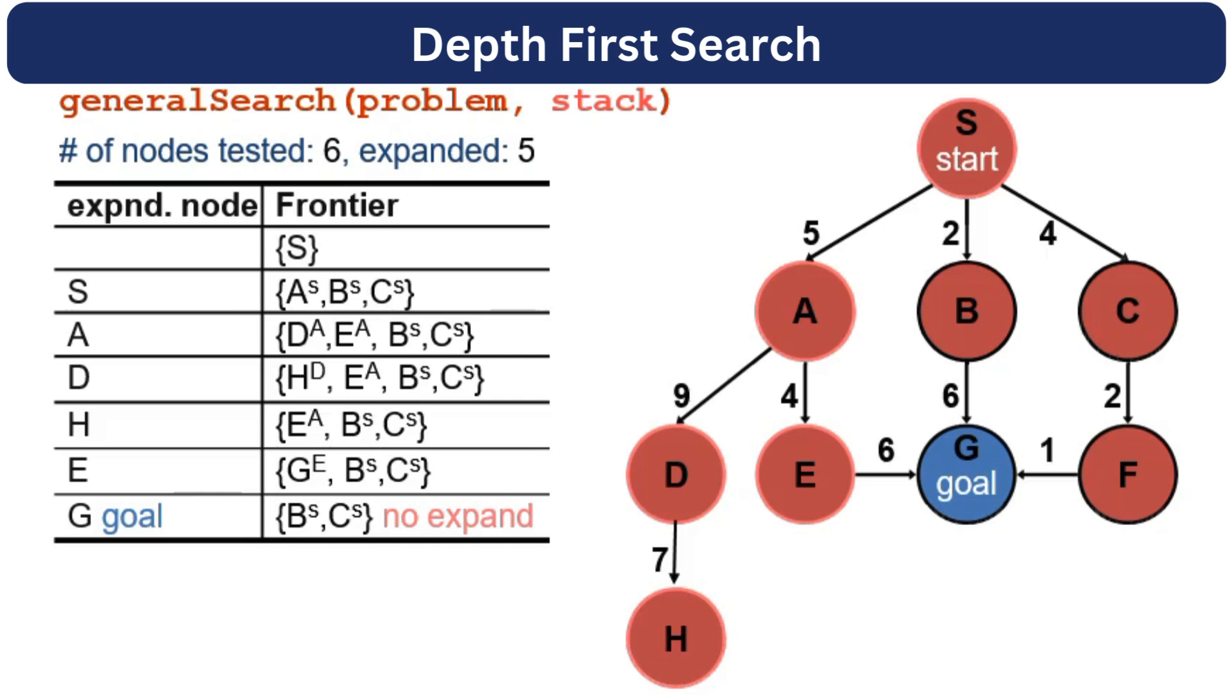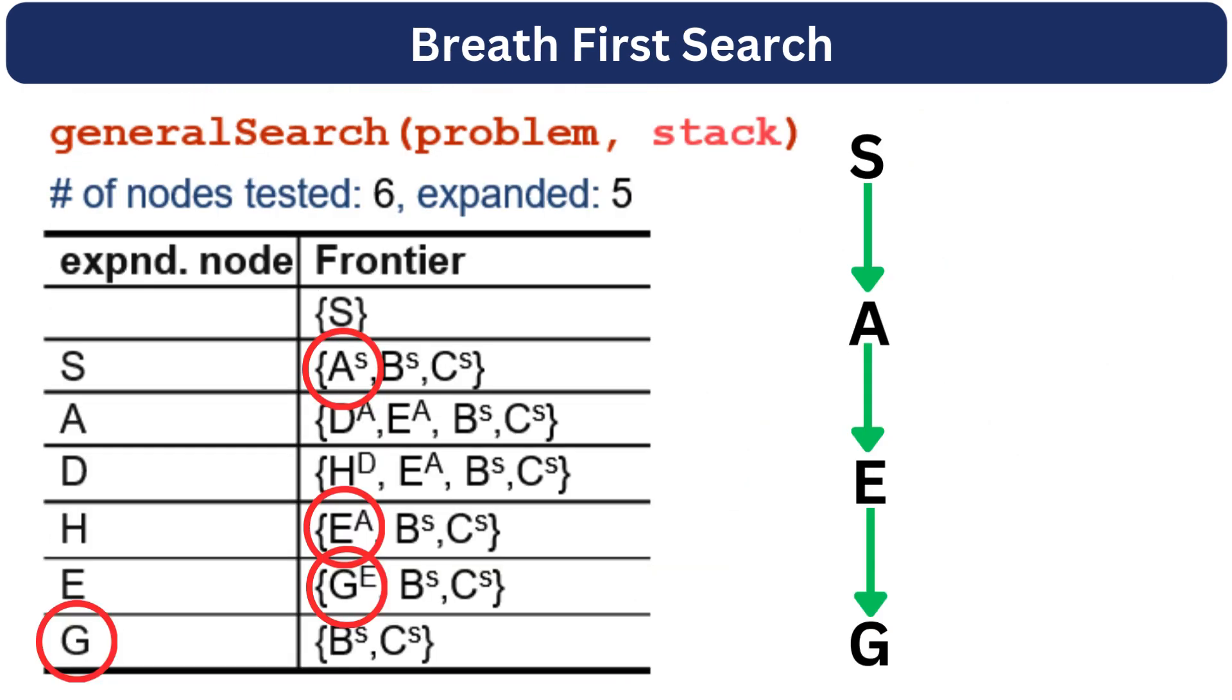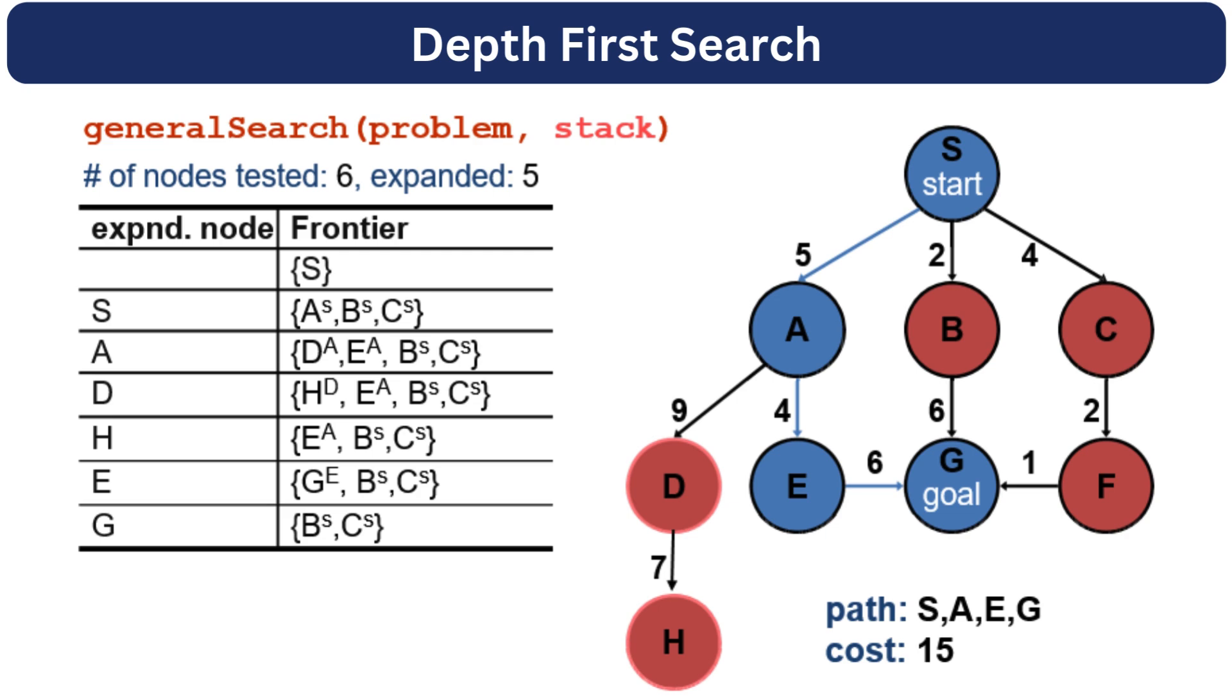Now let's backtrack and find the path from S to G. We got G node from E, and if we go to E node, it was expanded through A. And A node was expanded through S. So the path would be S, A, E, and G. And we can calculate the path cost by adding 5, 4, and 6. We will get 15.